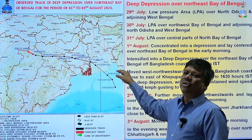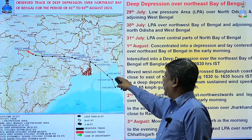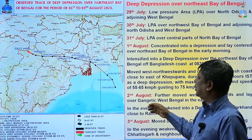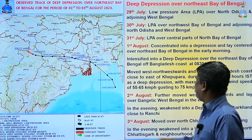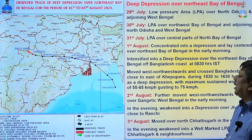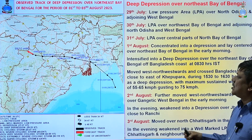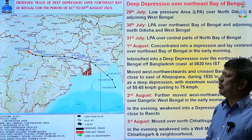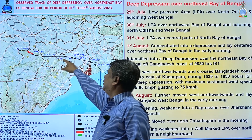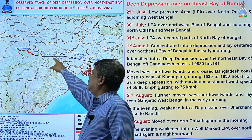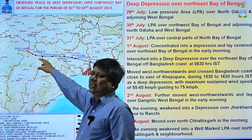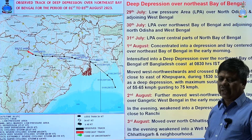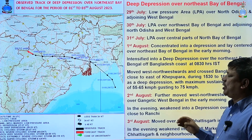Initially the depression moved northwestward, then west-northwestward, and in the morning it became a deep depression. In the evening it crossed the Bangladesh coast near Khepupara. It then went inside Bangladesh on 1st August, moved towards Gangetic West Bengal, reaching over Gangetic West Bengal on the morning of 2nd August. By the third morning it reached over North Chhattisgarh, and in the evening it became a well-marked low again.